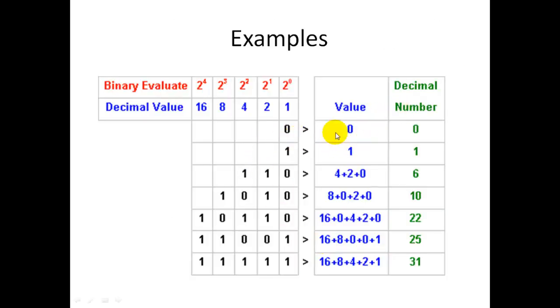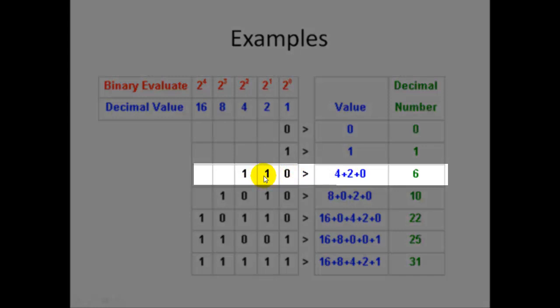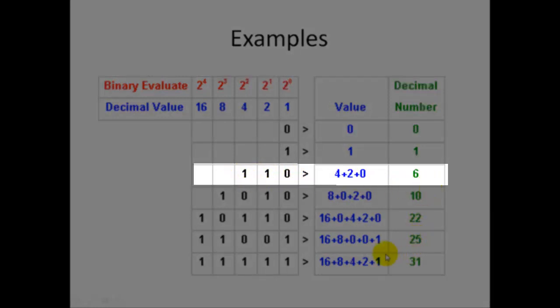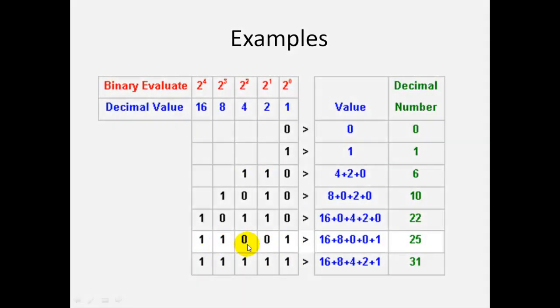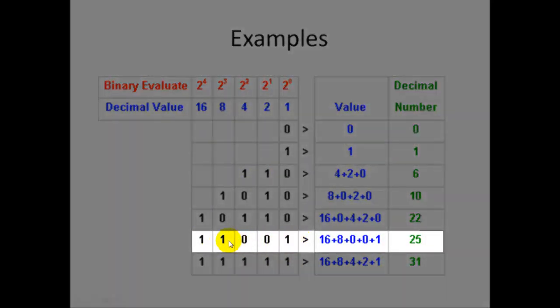And here we have, for example, look at this code here. This is no units, 1 two, and 1 four. So it's 4 plus 2 is 6. And so on. This is a 5-bit word, which is 16 plus 8, no 4s, no 2s, 1 unit. So 16 plus 8 plus 1 is 25.